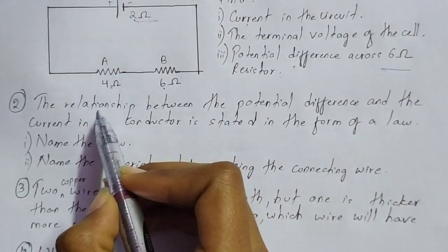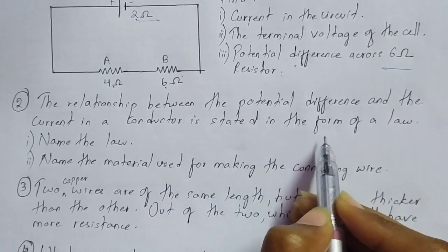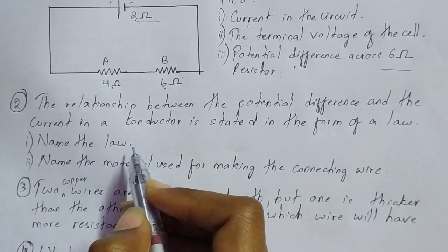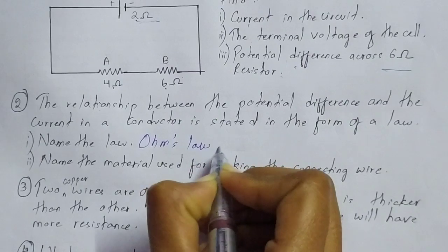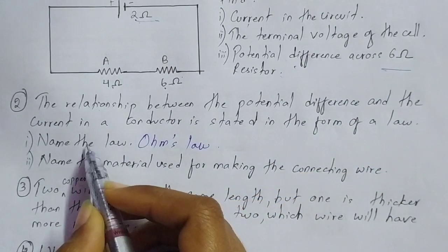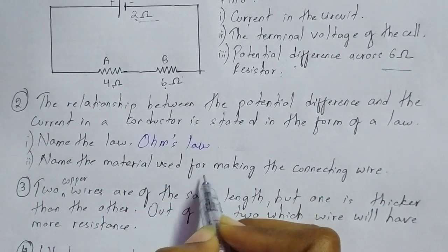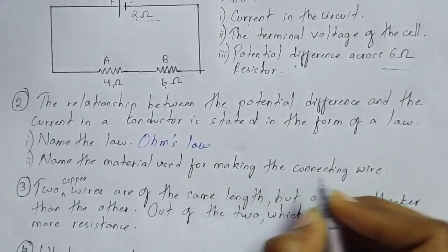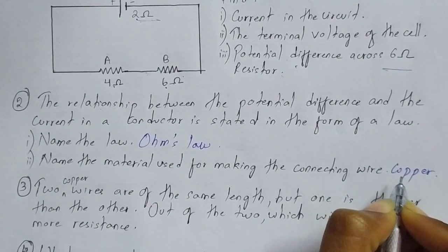Question 2: The relationship between potential difference and current in a conductor is stated in the form of a law — name the law. The answer is Ohm's law. Ohm's law gives the relationship between potential difference and current in a circuit. The subpart asks: name the material used for making connecting wires. Connecting wires are made of copper, because copper has low resistance.